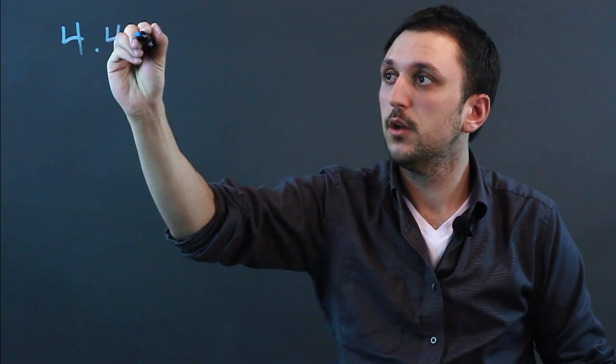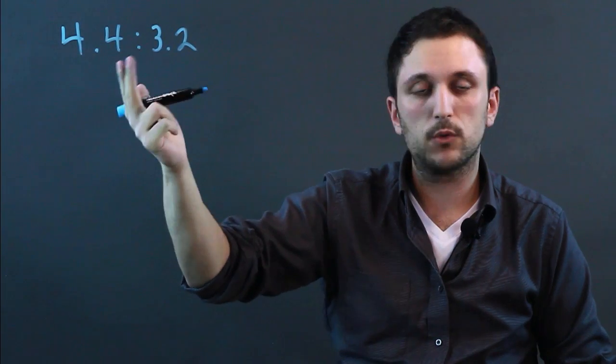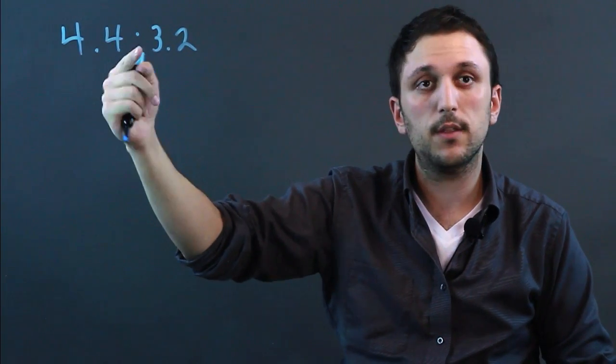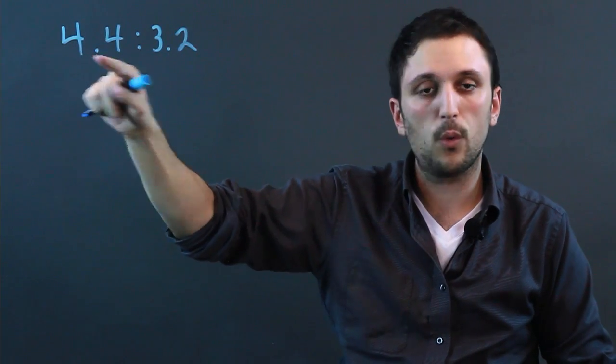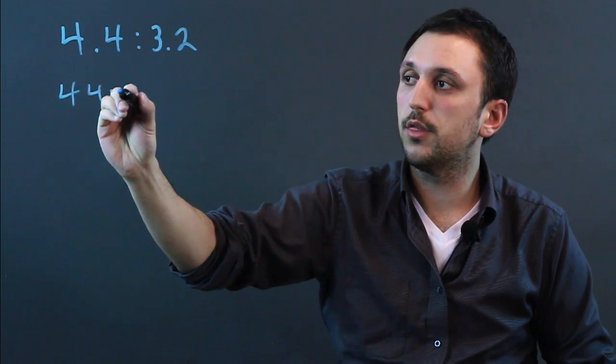So first, let's look at a simple one: 4.4 to 3.2. Now, decimals are annoying. We're only going into the tenth place, though, so we can multiply the whole thing by 10. So we have 44 to 32.